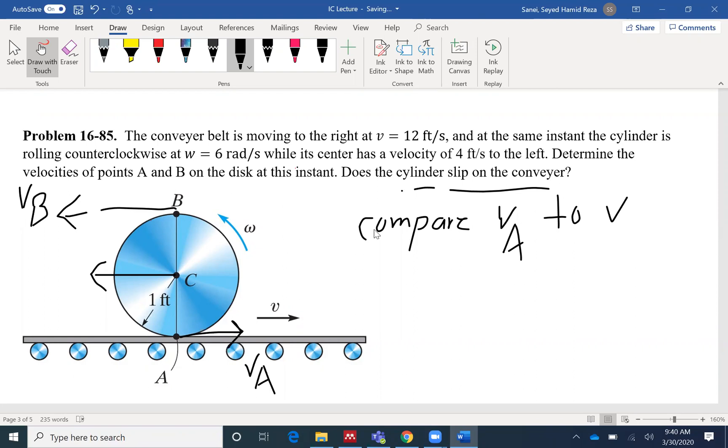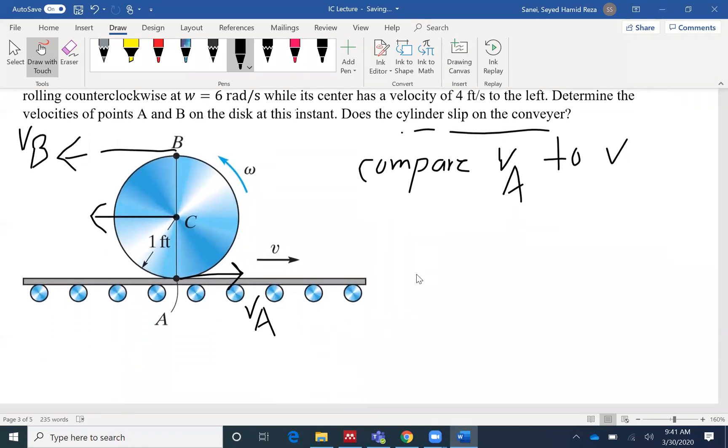So to solve this problem we can use two methods. We can use the IC method, instantaneous center of zero velocity, or the conventional relative velocity. We're going to solve this problem using both methods. First, let's start with the new topic, IC.